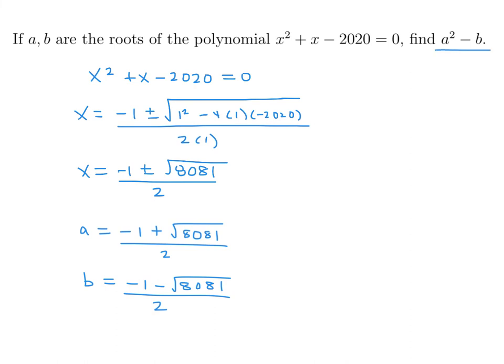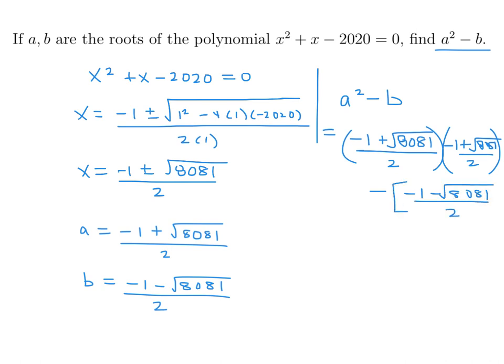Now they want me to figure out a squared minus b. So we got a little bit of algebra here. We got minus 1 plus square root of 8081, all over 2, and then we're squaring it, so same thing all over 2. And then we've got this minus b, which is minus 1 minus 8081, all over 2. So let's expand this: 1 minus 2 times 8081 plus 8081, and that's over 4 this time. And I'm going to make this over 4 just so I get a common denominator. So it will be minus 2 minus 2 times 8081.